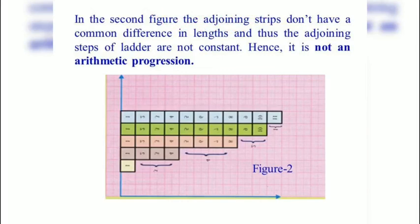But in the second figure, the adjoining strips don't have a common difference in length and thus the adjoining steps of ladder are not constant. Hence it is not an arithmetic progression.